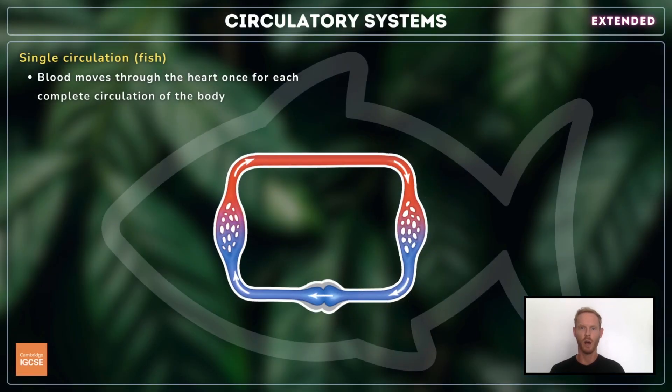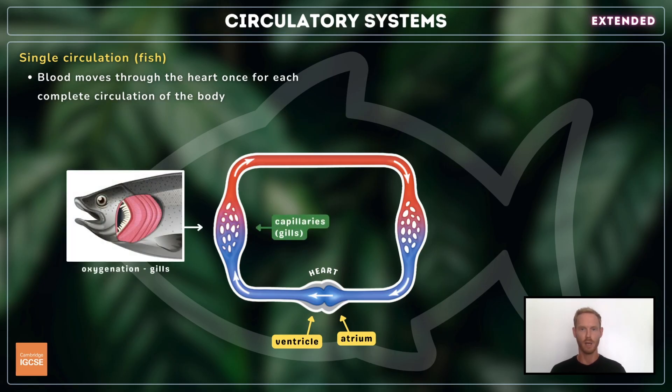So fish have a simple heart composed of two chambers: an atrium which collects blood returning from the body, and a ventricle from which blood is ejected. The muscular walls of the ventricle contract, pumping blood towards the gills to become oxygenated.